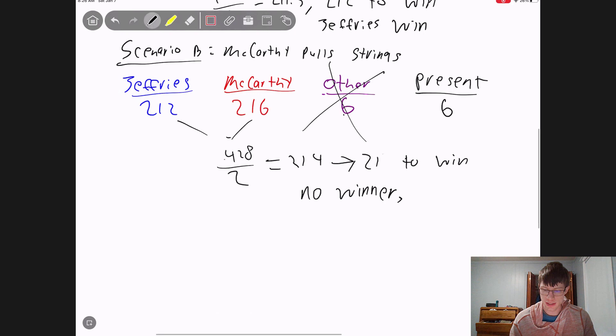So I'm starting to question how actually never McCarthy were those six people. Because if they truly were never McCarthy, then they would not have voted present because voting present made the threshold change so that he needed less votes, and he was able to get the votes that he needed.